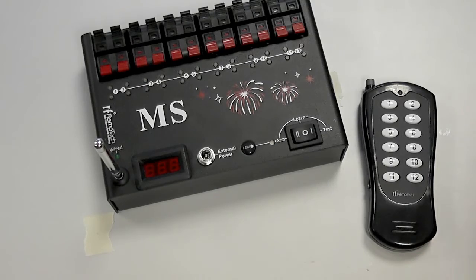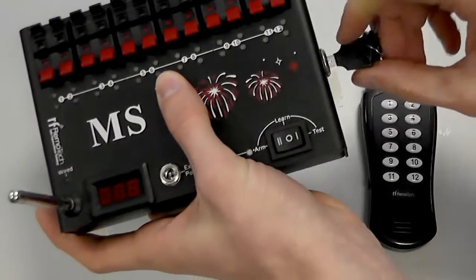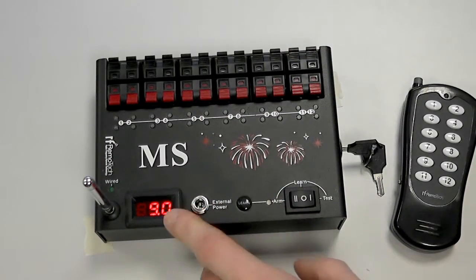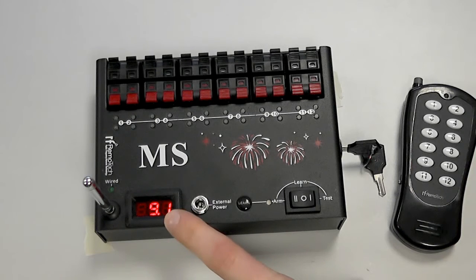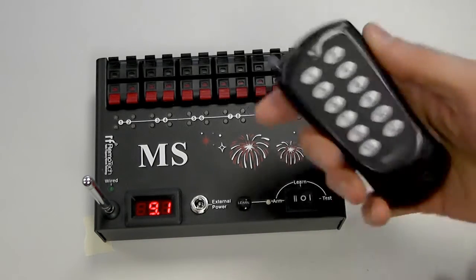So to switch the unit on you simply take your keys and insert them into the side switch it to on. The battery voltage meter is going to show you the battery voltage. We've got fresh AA batteries in here so it will show about 9 volts and you need to pair up the remote control to the receiver to make it work.